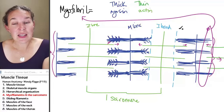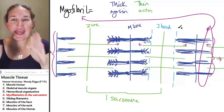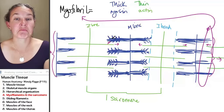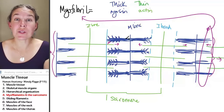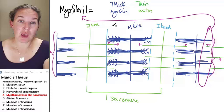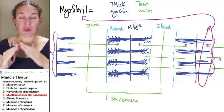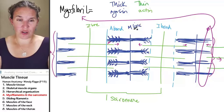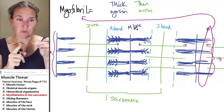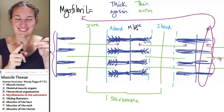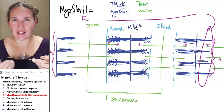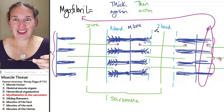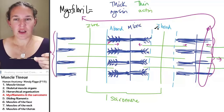The I band contains only thin filament. The thick filament is dark - that's the A band. The word dark has an A in it. I, light - the word light has an I in it.